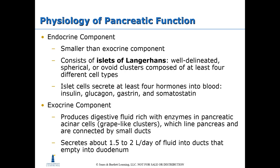The endocrine component produces hormones involved in regulating blood glucose levels and digestive processes. These are produced by the islets of Langerhans, and the hormones include insulin, glucagon, gastrin, and somatostatin. The exocrine component is the digestive function of the pancreas — it produces digestive fluids that are rich with enzymes.